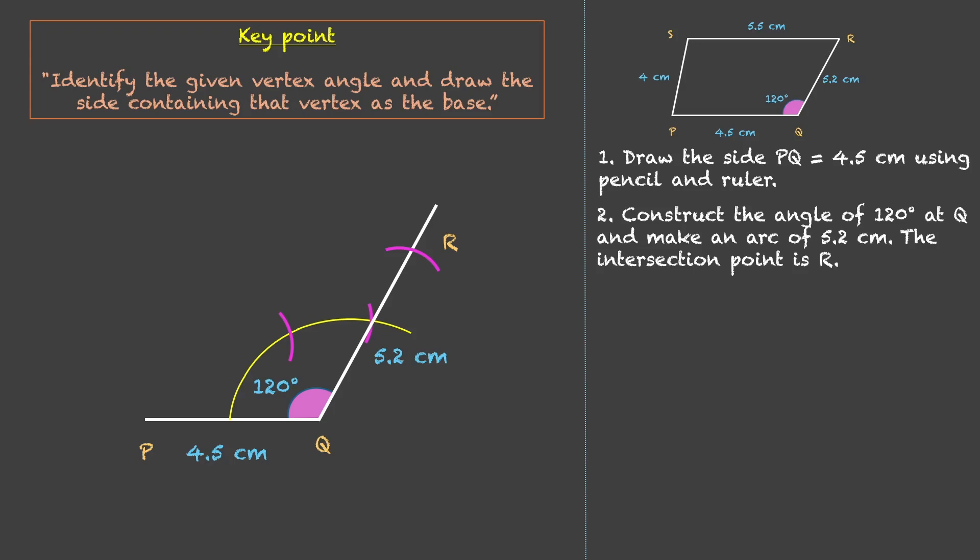Now let us move on to next step. We need to make an arc from R which will be of 5.5 cm because that is the only information which we have. And from P, we'll make an arc of 4 cm such that both of these arcs intersect at a point which we'll call S.